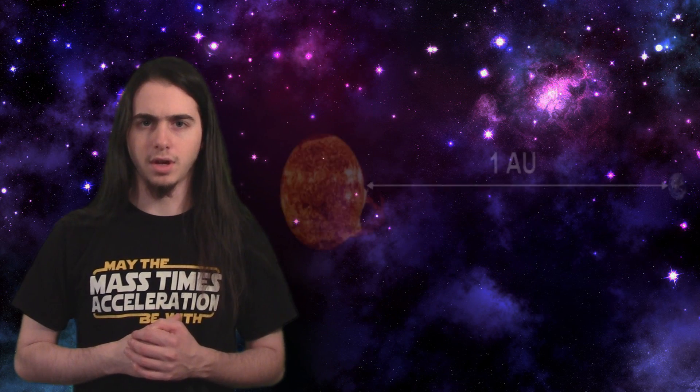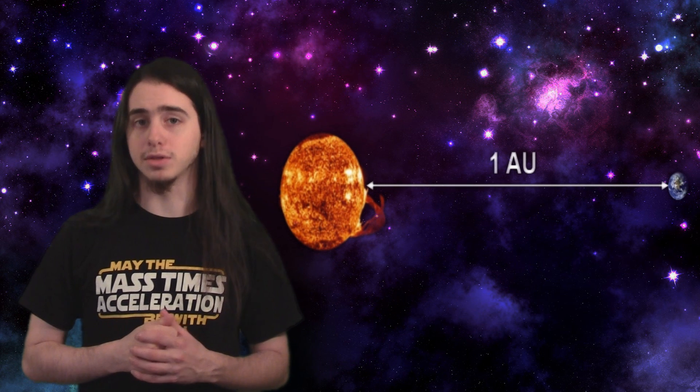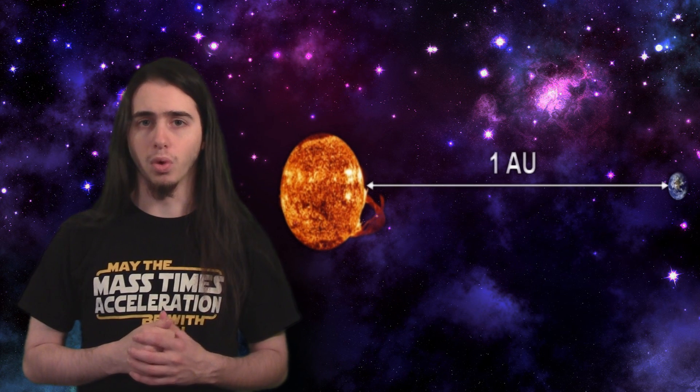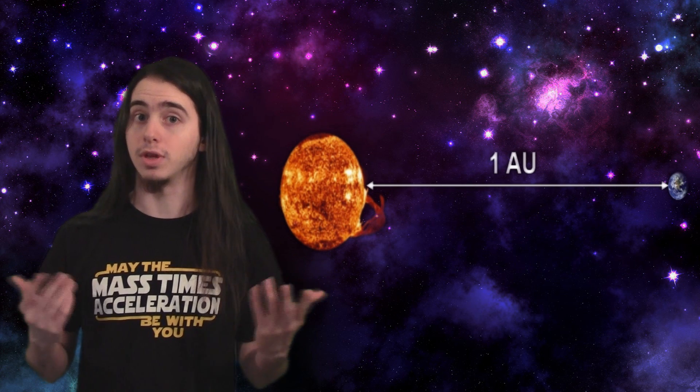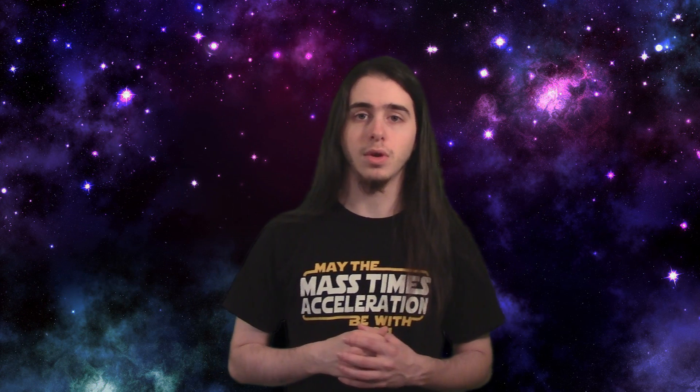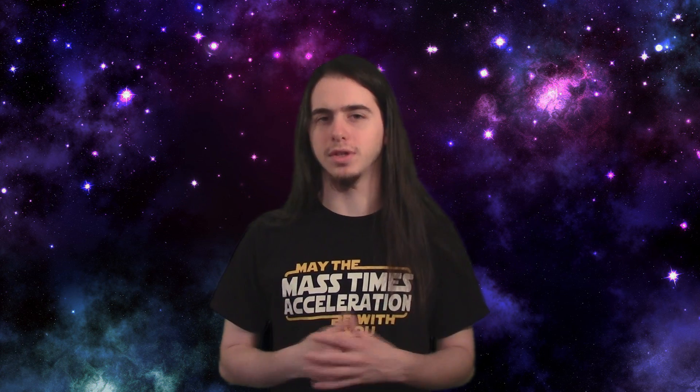The Earth orbits around the Sun at around 93 million miles away, or 1 AU — an astronomical unit. Keep that in mind when we figure this out. A parsec is used when we try to find distances to nearby stars, and we use the Sun as a kind of starting point. Keep that in mind too.